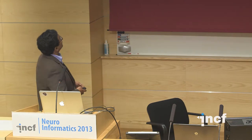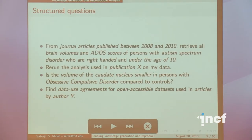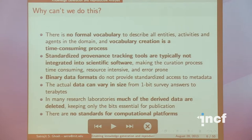The reason we can't do this is that in many cases we need a formal vocabulary. ADOS scores means nothing to those who don't work with autism, and we need a way of communicating that to a computer, let alone a human being. So we need formal representation. There is no formal vocabulary to describe all entities, activities, and agents in a domain, and vocabulary creation is a very time-consuming process — many people here are bigger experts at this than I am.